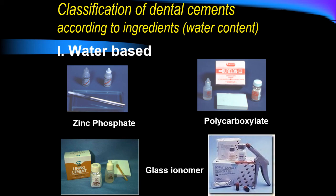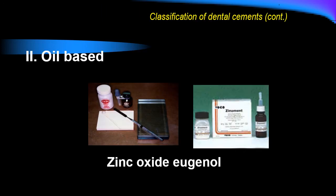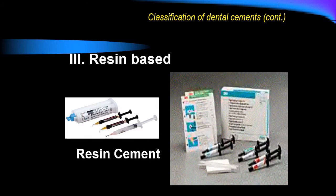Dental cements are classified according to the water content of their liquid, because the liquid is an acidic solution with a percentage of water. When the cement liquid contains water, it is called a water-based cement — examples include zinc phosphate cement, polycarboxylate cement, and glass ionomer cement. We also have oil-based cement, where the liquid is an oil, like zinc oxide eugenol cement. A third type contains no water at all and is called resin-based cement, like composite resin cement, which is used mainly for cementation of aesthetic restorations.